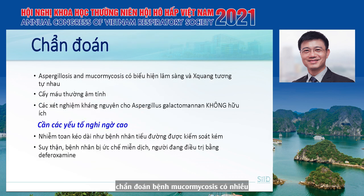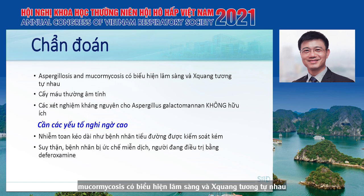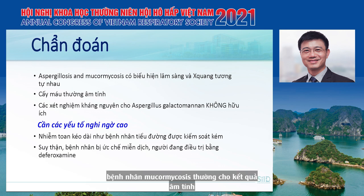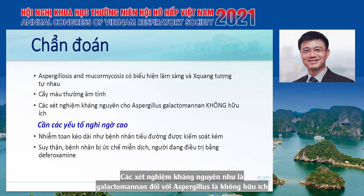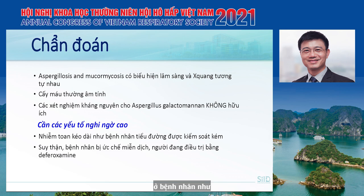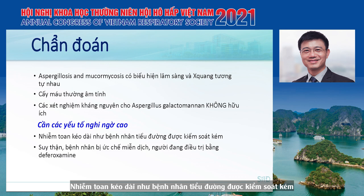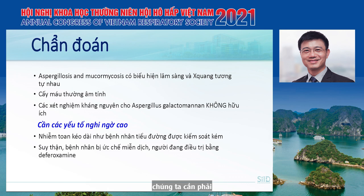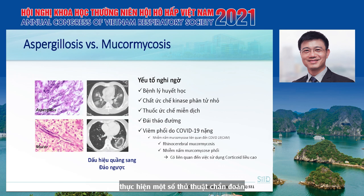Diagnosis of mucormycosis is challenging because aspergillosis and mucormycosis share similar clinical and radiological presentations. Cultures in mucormycosis patients are usually negative, and antigen tests such as galactomannan are not diagnostic for mucormycosis. A high index of suspicion is required—in patients with prolonged acidosis, poorly controlled diabetes, renal failure, or immunosuppression with a lung lesion, diagnostic procedures such as biopsy should be performed.